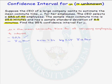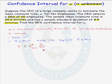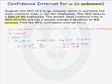Now we are ready to put the formula for the t confidence interval down. The formula is given by our estimate for the population mean, x-bar, plus or minus a t critical value with n minus one degrees of freedom, multiplied by the sample standard deviation divided by the square root of the sample size. The sample mean is 25.6 minutes, the sample standard deviation is 8.5 minutes, and the sample size is 40. The only part we do not know is the t critical value.